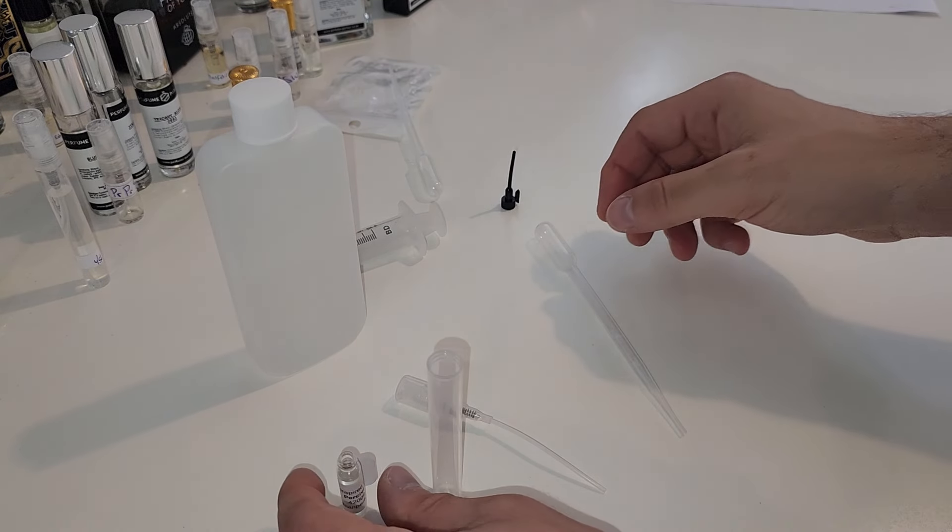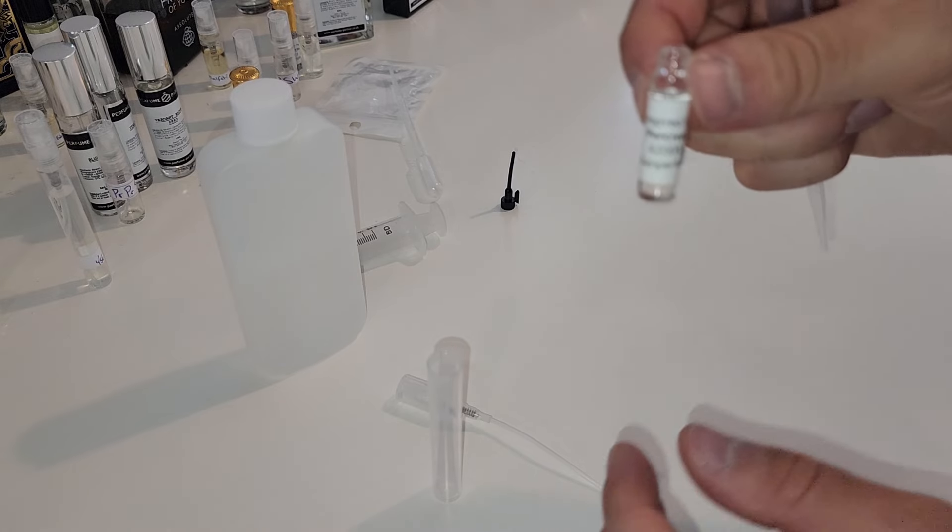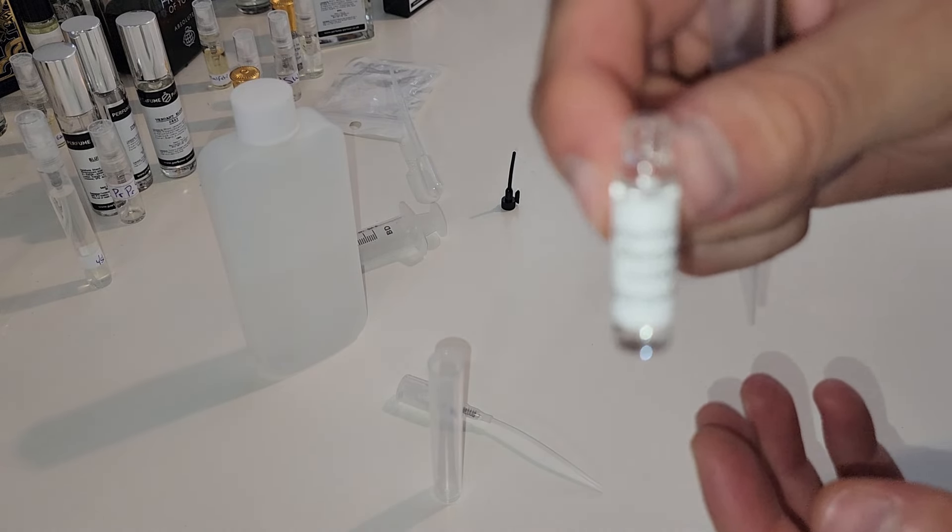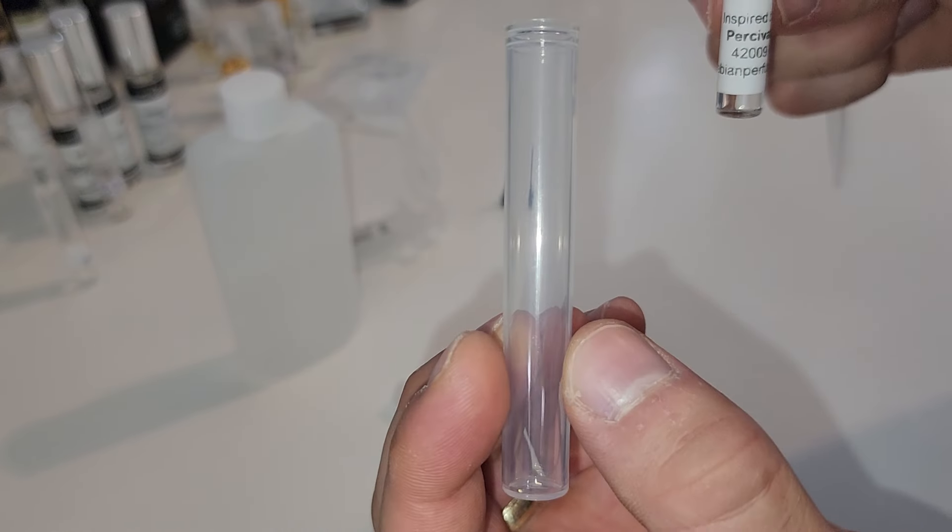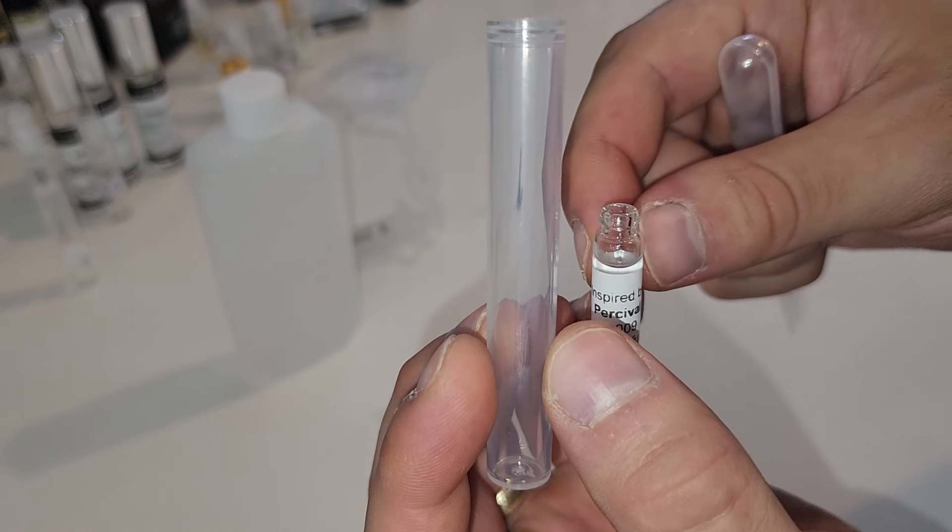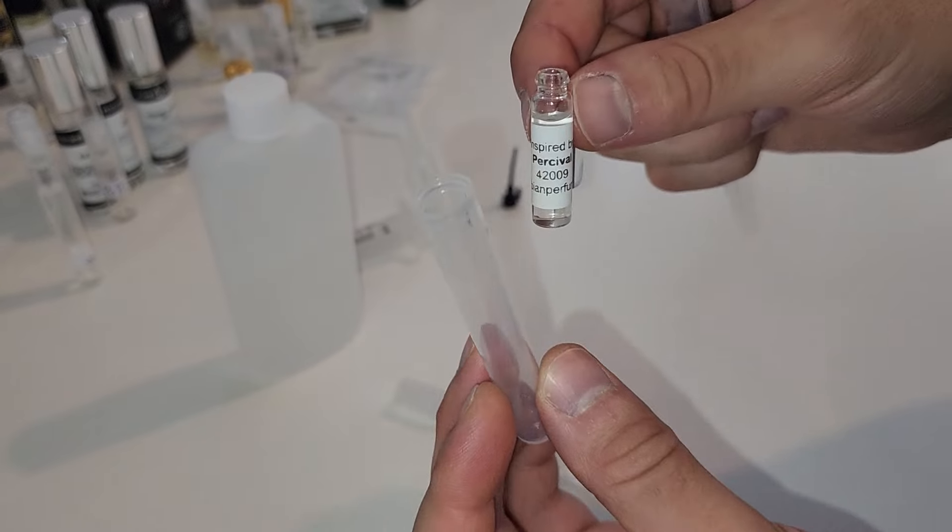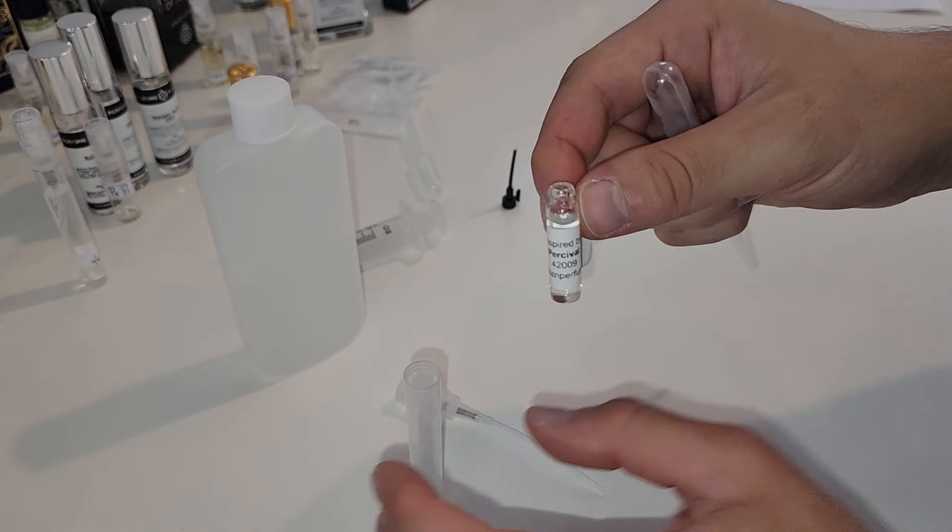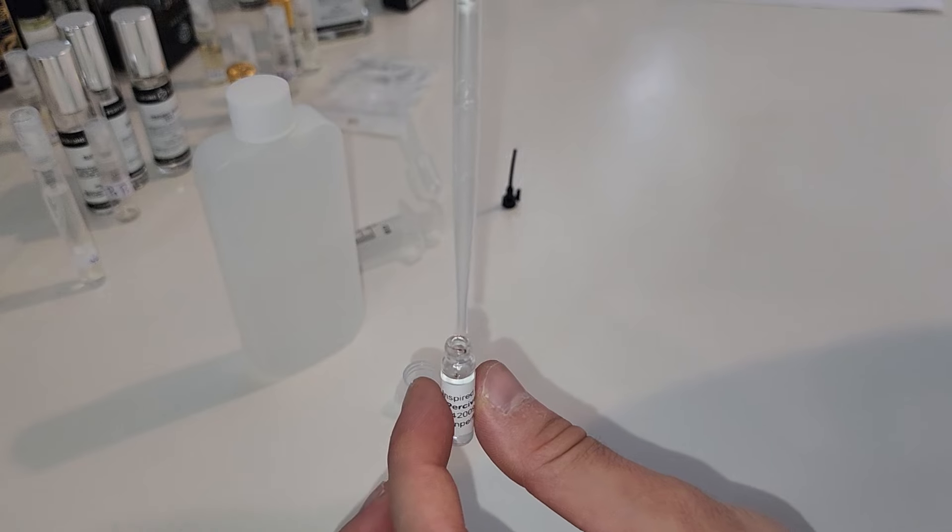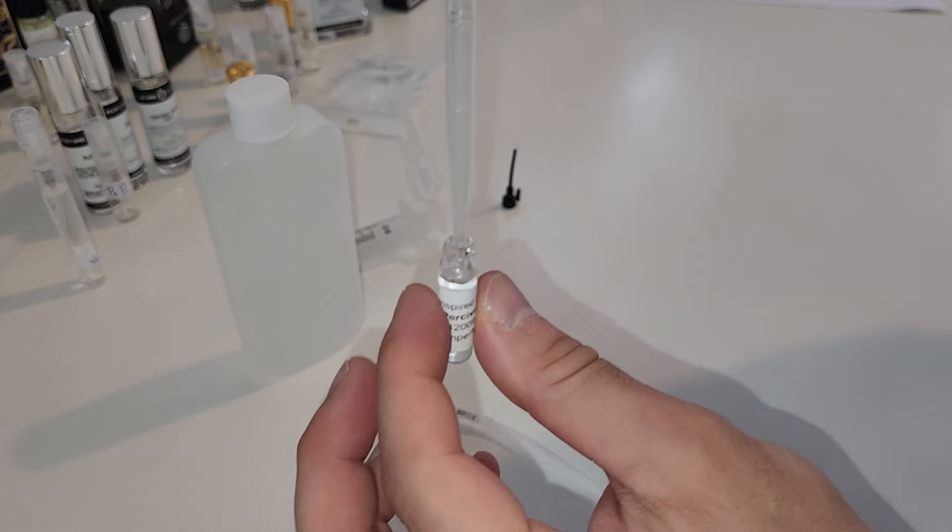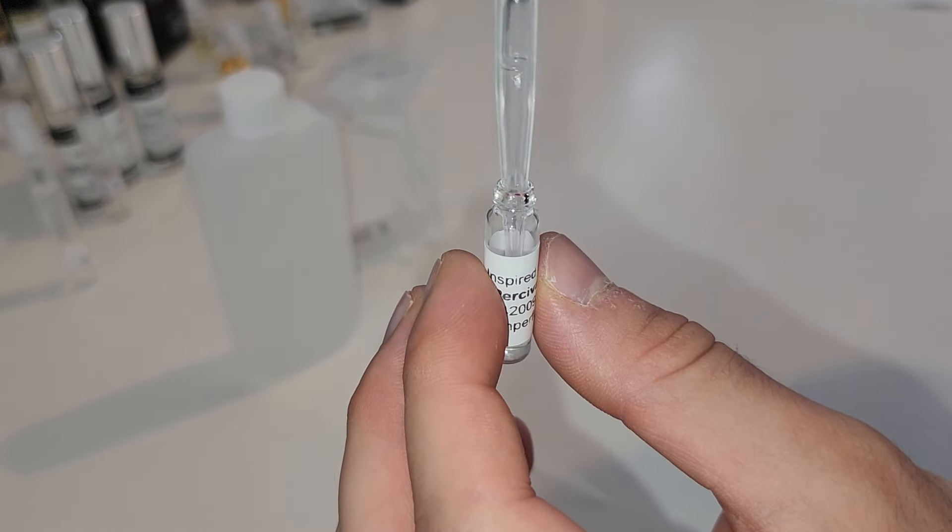So we're not going to use this whole one milliliter decant. We're going to use most of it maybe about 0.8 or 80% of it because we've got a five milliliter vial in there. We're going to fill it up and we want a little bit left of that oil so we can test it on its own on skin. So let's collect our oil from our glass bottle.